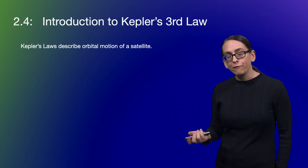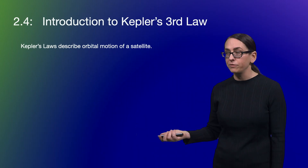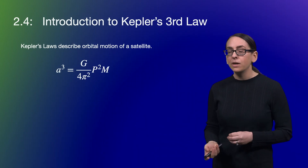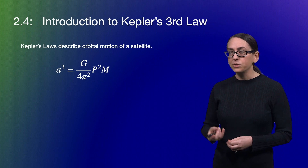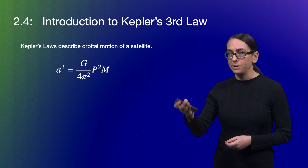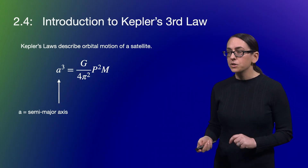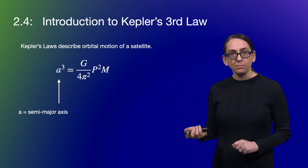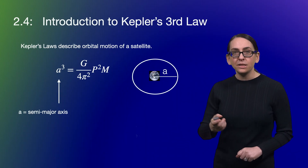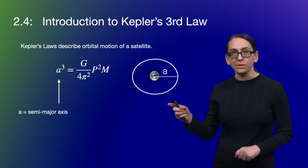Moving on, the first thing I want to introduce is Kepler's Third Law. We've talked about this a couple of times — now we're going to get all the details right. Kepler's law states: a cubed equals G over 4π squared, times p squared times M. Let's go through each of these individually. We've talked about 'a' in previous segments — this is the semi-major axis, which is the distance from the center of the object out to the ellipse.